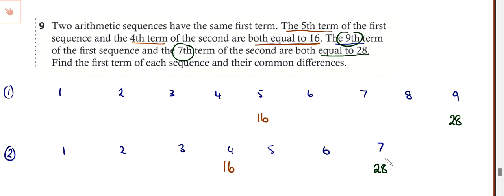Potentially you don't need to do that but let's keep them separated. What information can I now put into my list there? The fifth term. So the fifth term of the first sequence and the fourth term of the second are both equal to 16. So the fifth term is 16 and the fourth term is 16. And actually I need to go further. So I've got 8th and 9th. The ninth term of the first sequence and the seventh term are both 28. So the ninth is 28 and the seventh is 28. Right. Will that make sense?